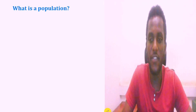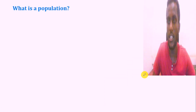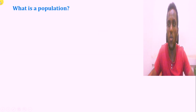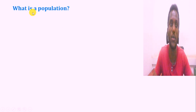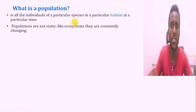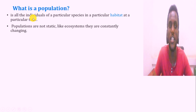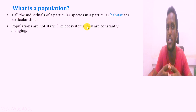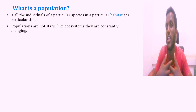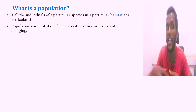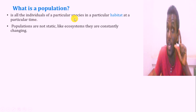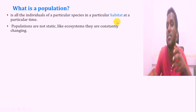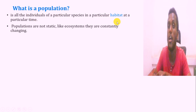So let us define what is meant by population. By definition, population is a group of individuals that maybe lives in a given ecological area, or it is all the individuals of a particular species in a particular habitat at a particular time — this is known as population.